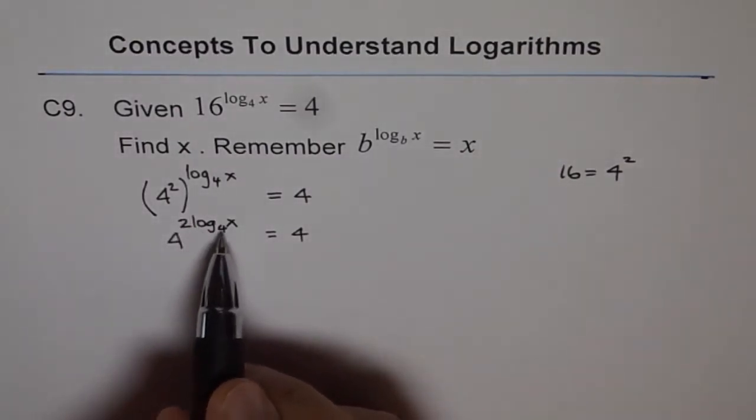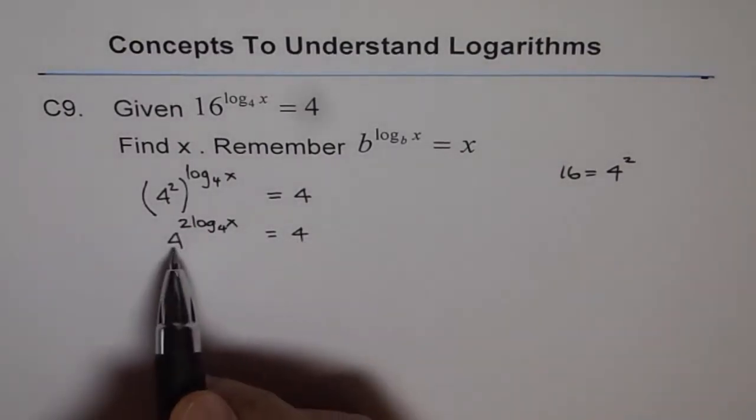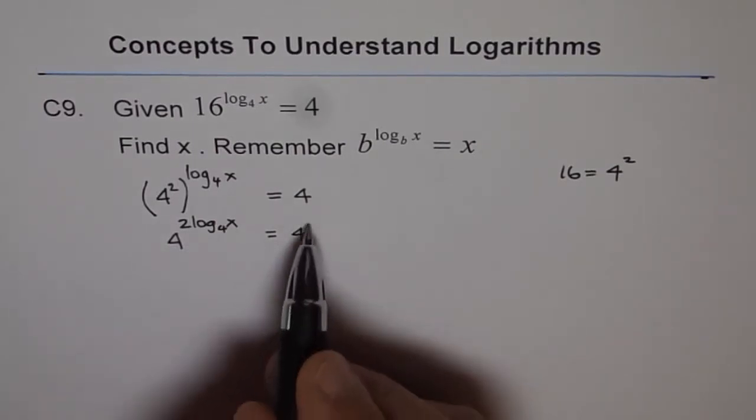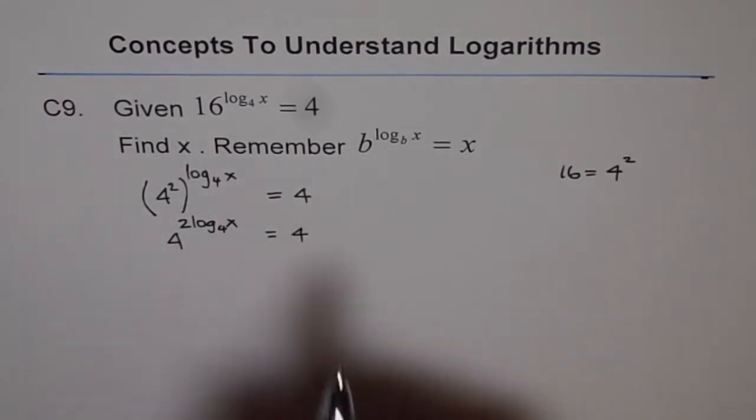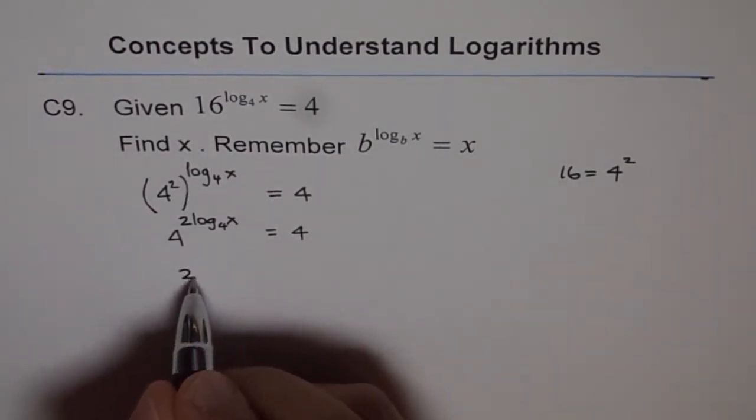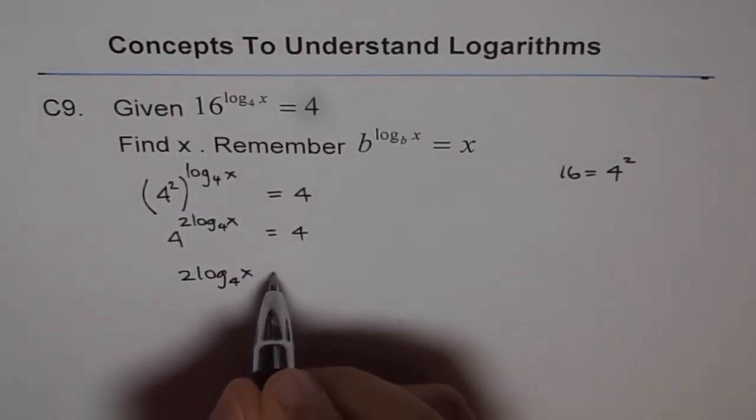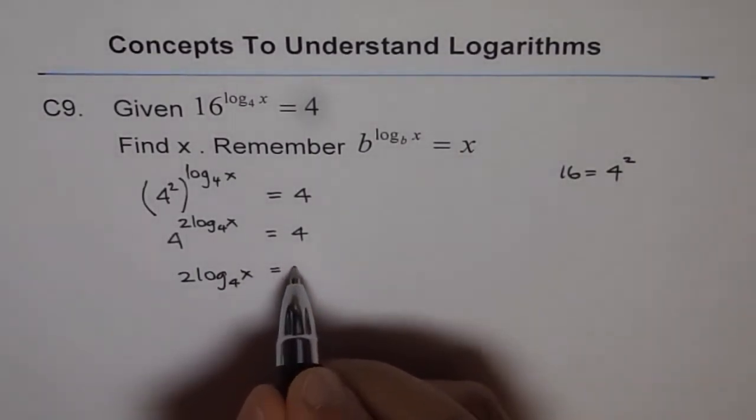So that means 2 to the power of log 4x is 1. Because with the same base, their exponents should be equal for them to be equal. Therefore, 2 log base 4 of x is equal to 4.